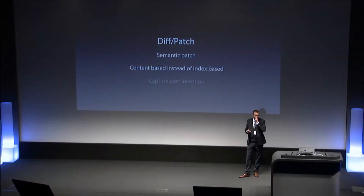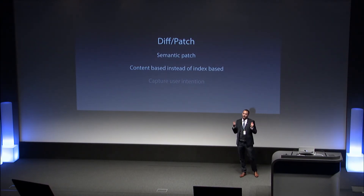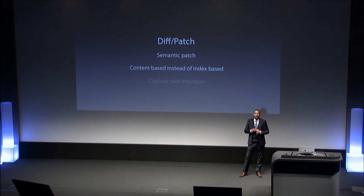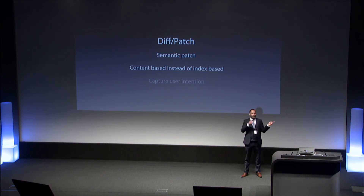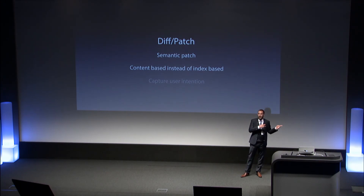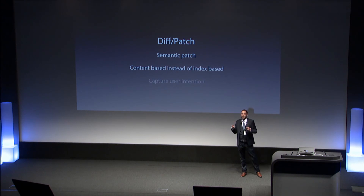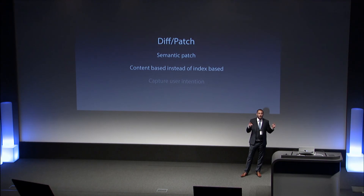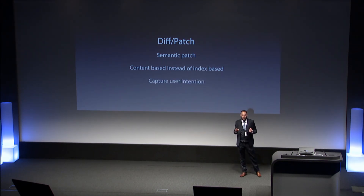This is where it's really good. The crucial understanding about this kind of approach is that in our first example with operational transformation, we had operations like 'insert Y before position 2' — but we lose the concept of 'between B and C.' The problem with operational transformation is that it's index-space, whereas here the patch is context-space: it keeps the information 'between B and C,' so it really captures user intention.